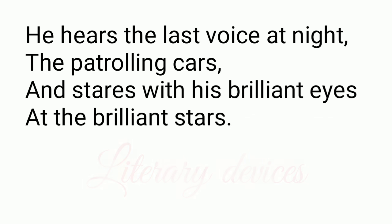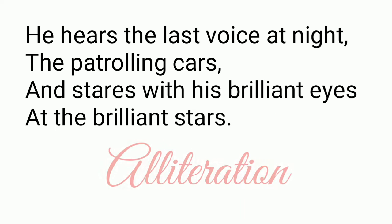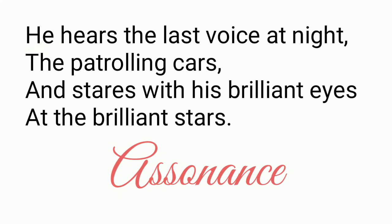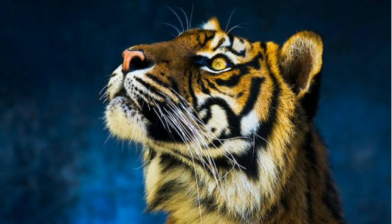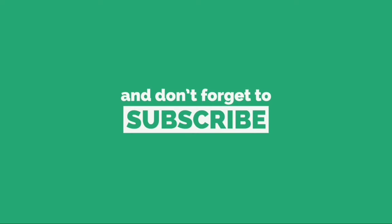We can see enjambment here where the third line continues into the fourth line without any punctuation mark: 'and stares with his brilliant eyes at the brilliant stars.' Then we have alliteration where the 'H' sound is repeated in 'he hears.' We also have assonance where the 'I' sound is repeated in 'with his brilliant.' Hope you were able to understand the poem and its literary devices properly. I'll soon be back with another video. Wish you all the very best for the upcoming exam.